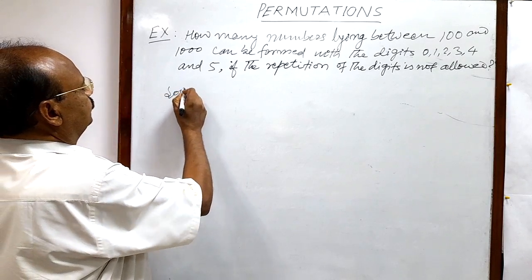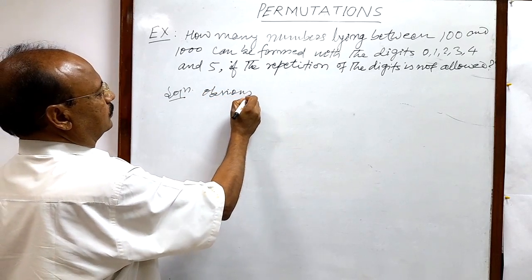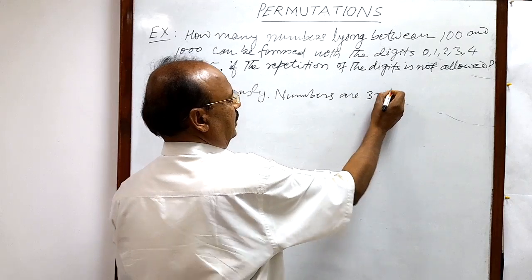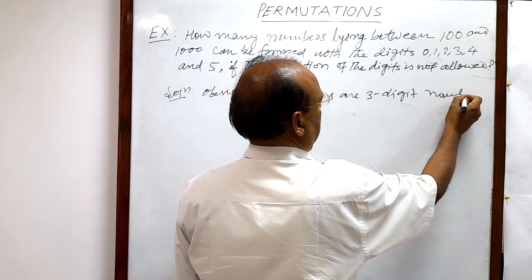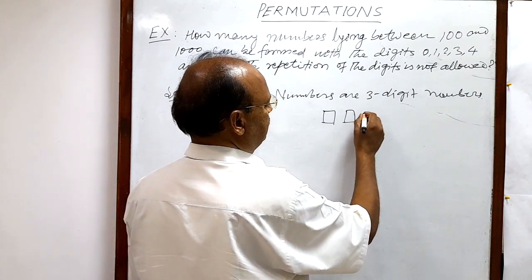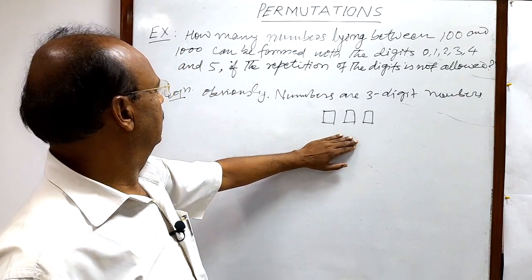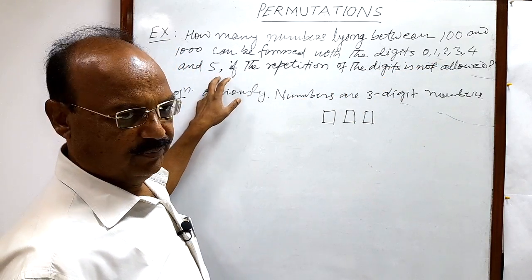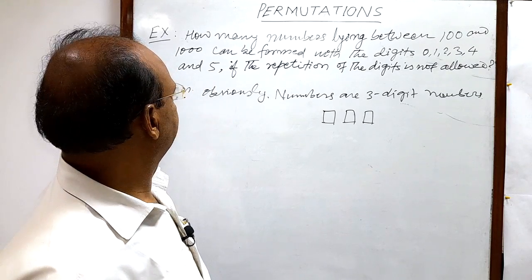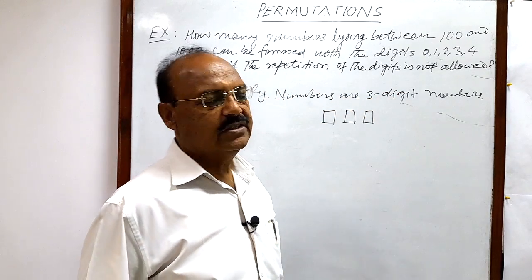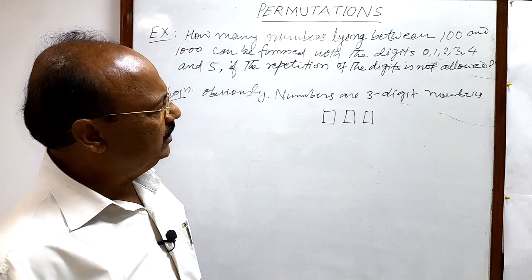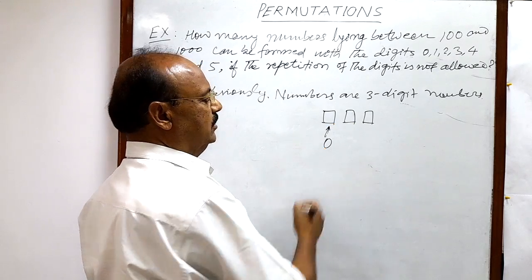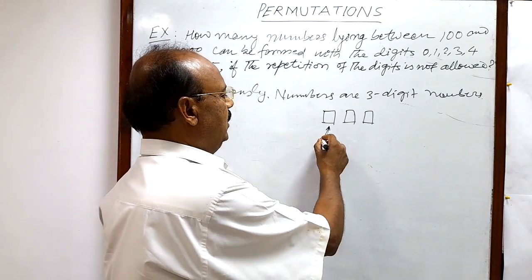So obviously the numbers are 3-digit numbers. We have to fill up these 3 places with the help of these 6 digits: 0, 1, 2, 3, 4, and 5, with the condition that repetition of digits is not allowed. The only thing we have to take care of is that in the hundreds place, we cannot place 0, otherwise it will become a 2-digit number.